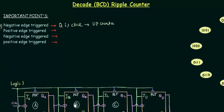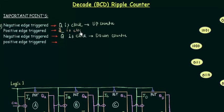All the time when we want an up counter we use negative-edge triggered flip flops and take Q as the clock of the next flip flop. When I was teaching up/down counters, I mentioned that the best way to have a down counter is to use negative-edge triggered flip flops and take Q complement as the clock. If you have a positive-edge triggered flip flop and take Q complement as the clock, you will have up counting.